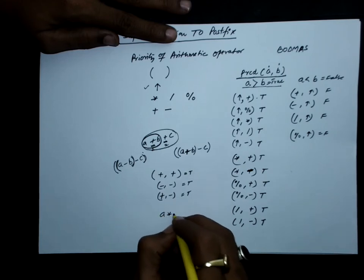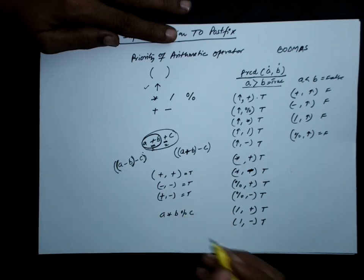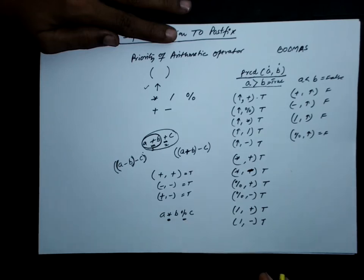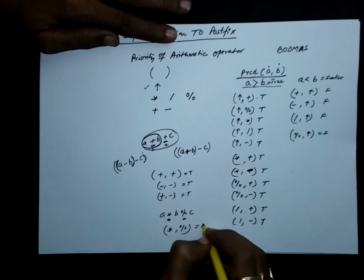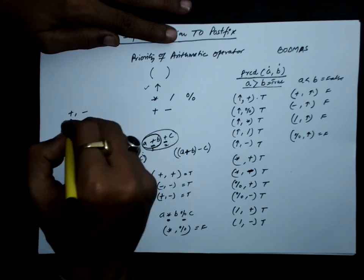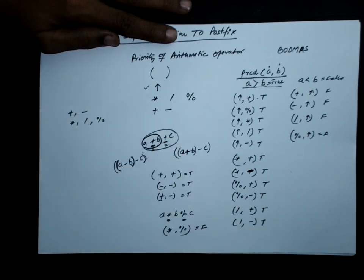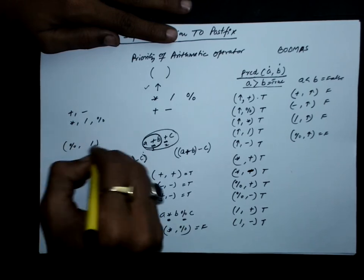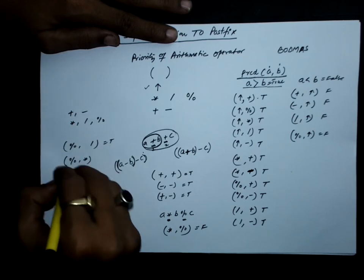Consider A * B % C. If we ask whether multiplication has higher precedence than modulus, the answer is true, because multiplication, division, and modulus are all left-associative operators. So when two operators of the same priority appear back to back and are left associative, the precedence function returns true. Modulus over division is also true, and modulus over multiplication is also true.